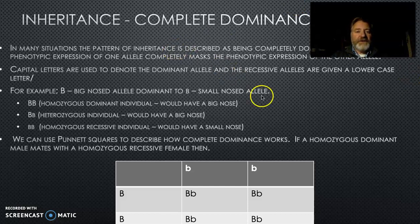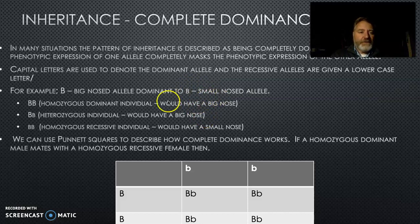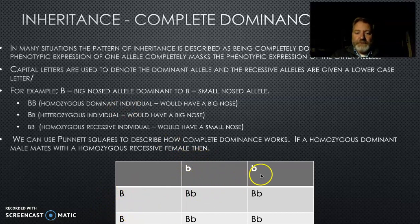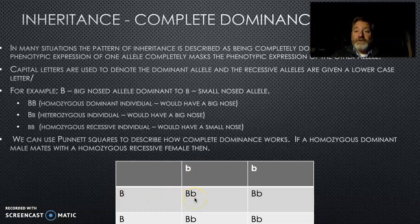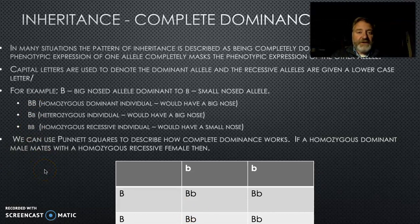We can have complete dominance. Using the example of nose size: a homozygous dominant individual (BB) has a big nose, and a homozygous recessive individual (bb) has a small nose. All their offspring receive a big B from dad and a little b from mum, making them Bb — so they all have big noses but carry the allele for small noses to pass on to their children. This is demonstrated using a Punnett square, which is a really useful technique.